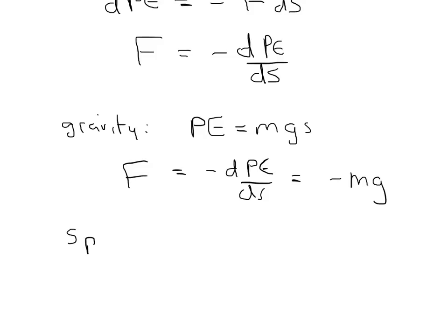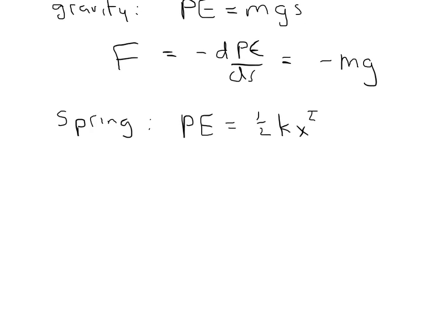We can do the same thing with a spring. We derived the force of a spring and the potential energy of a spring, which equals one-half kx squared. Taking the derivative, the force is minus dPE/dx. When I take the derivative of one-half kx squared, that's just kx, so I get minus kx, which returns Hooke's law.